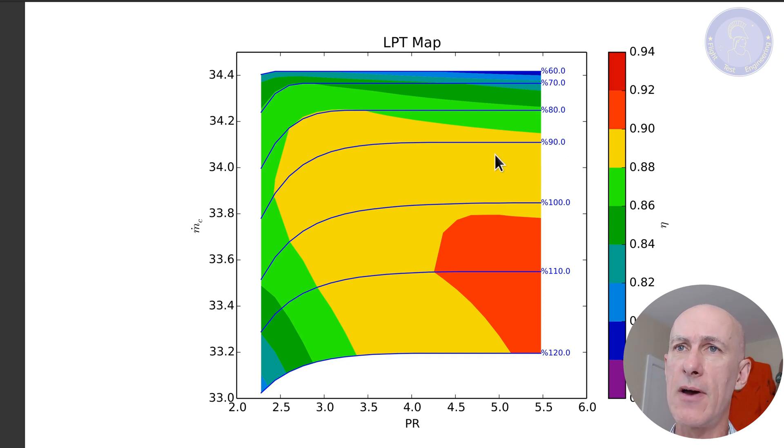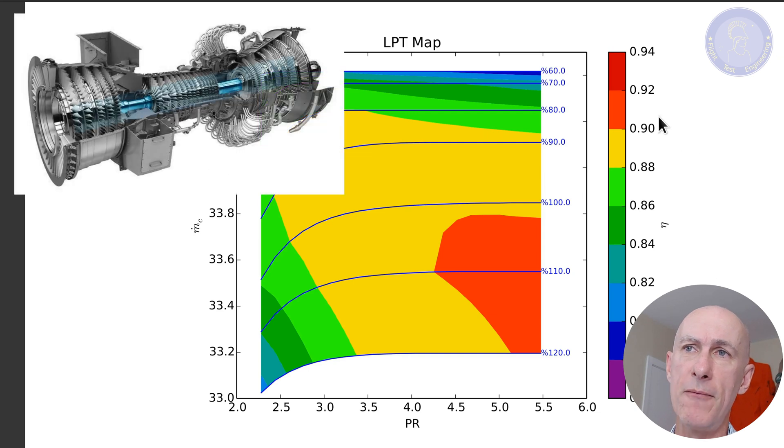Notice also the design point where the efficiency is best. Notice an interesting thing that is different from the compressor: the yellow region is wide. This allows for the turbine to operate in a large space with close to optimal efficiency. We're talking about two percent change here from the red to yellow so it's not much, still considerable. These are the reasons why we have many fewer turbine stages than the compressor. We can drop the pressure and expand the gas considerably more per stage.